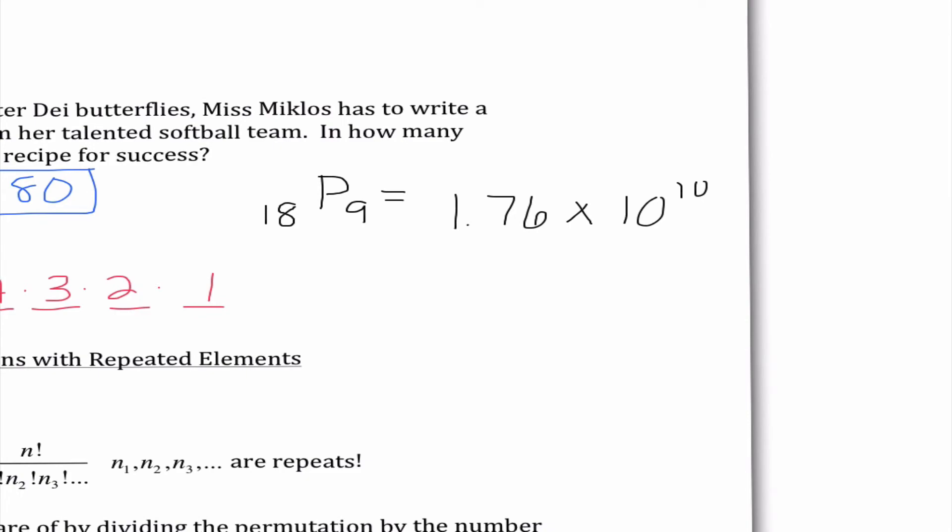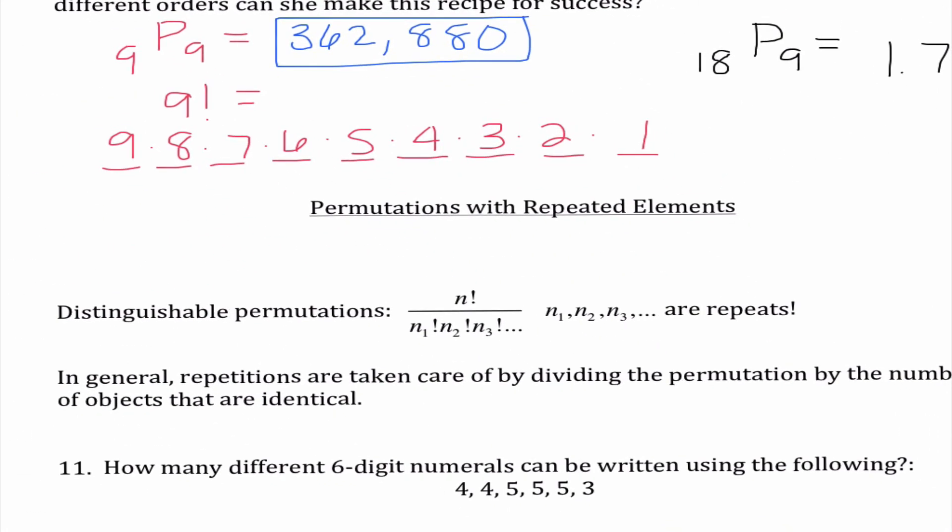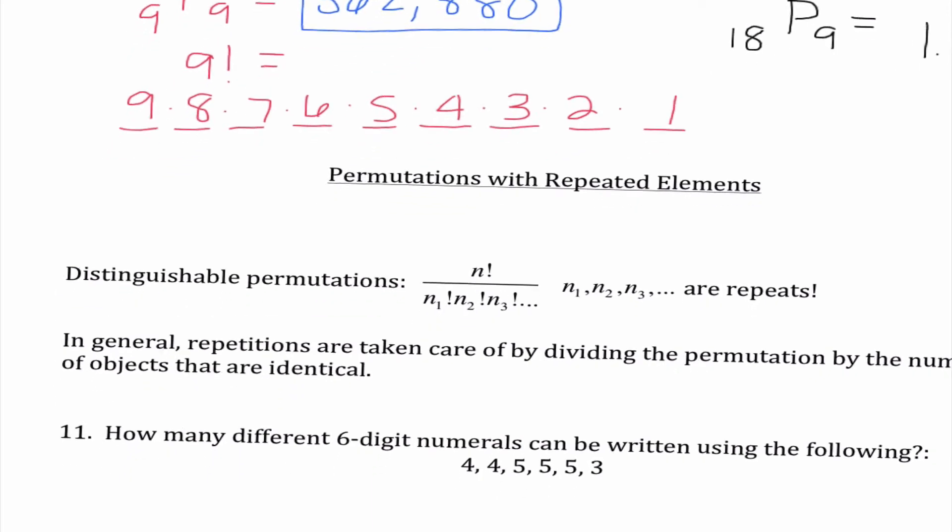So as we're seeing combinations and permutations are not difficult to compute. The difficult part is seeing does the order matter? So that is the question we have to ask ourselves every single time.